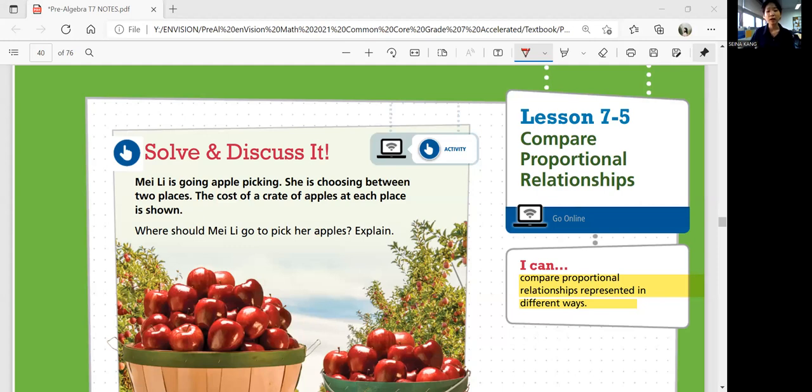Let's look at solve and discuss it. May Lee is going apple picking. She's choosing between two places. The cost of a crate of apples at each place is shown. Where should May Lee go to pick her apples? Explain.